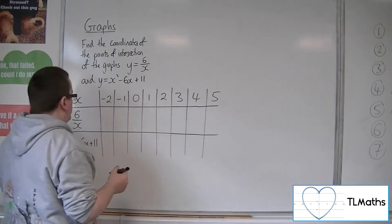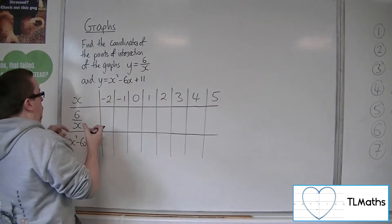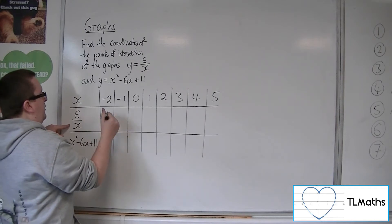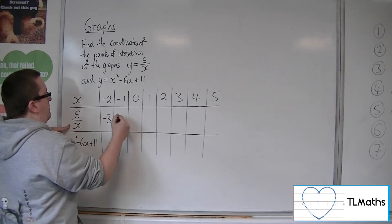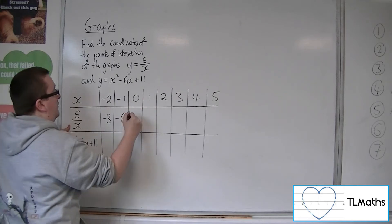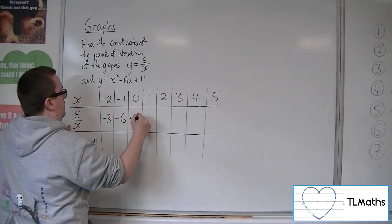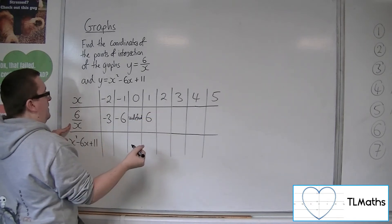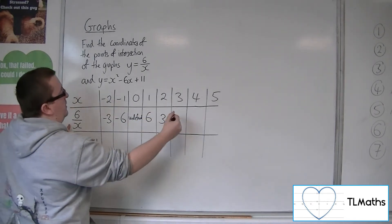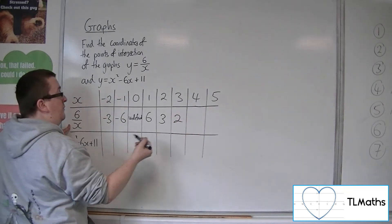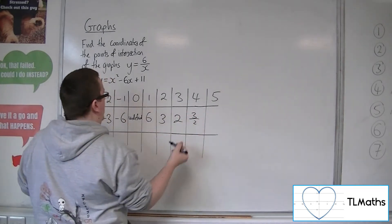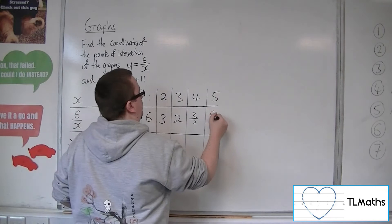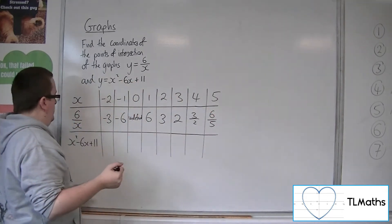So what will we have? So 6 over minus 2 is minus 3. Then we'd have minus 6. Then we would have undefined. And then we'd have 6. Then we'd have 3. Then we'd have 2. Then 6 over 4, so 3 halves. And then 6 fifths.